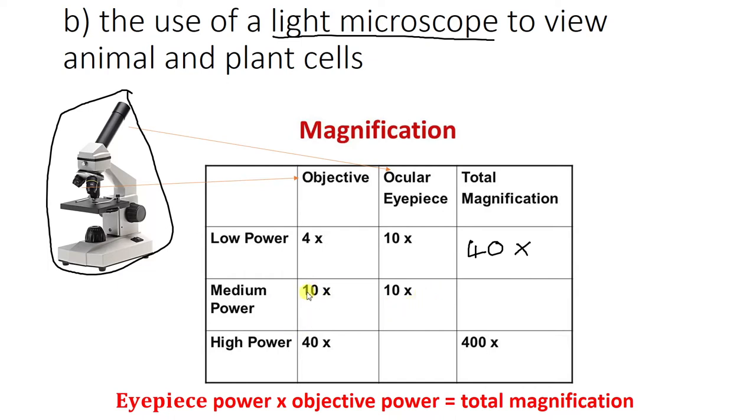On medium power then, we go up to 10 of these lenses, so this next biggest one will be 10. So 10 times 10 is going to be 100 total magnification.